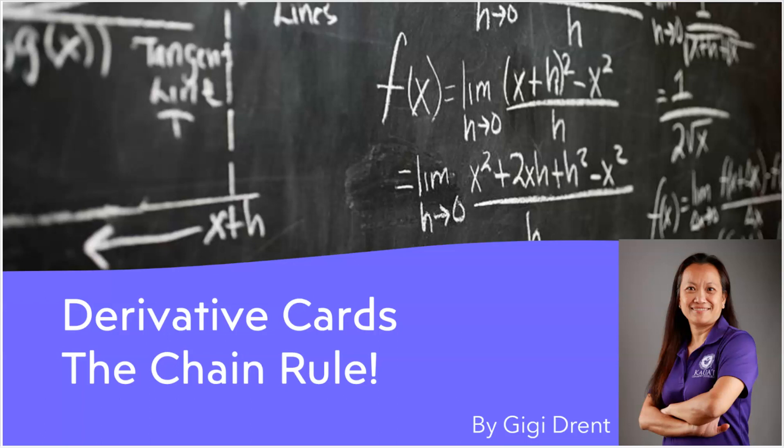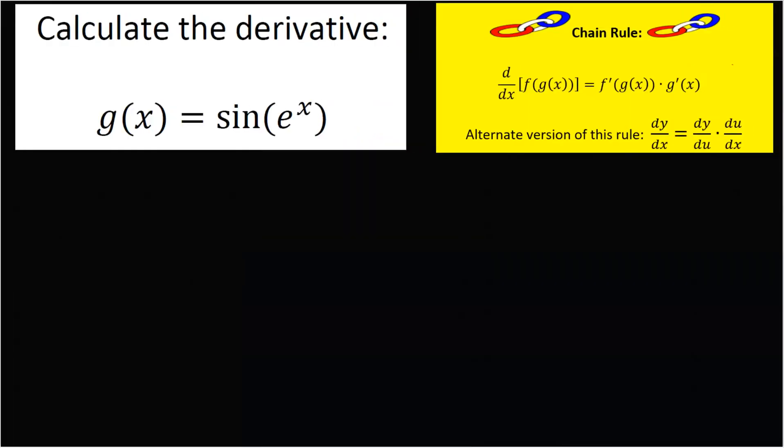Hey class, this is Gigi from Kauai Community College. This is number four of the Derivative Card Series. There are like I think 30 cards or something. So this is number four and we are applying the chain rule.